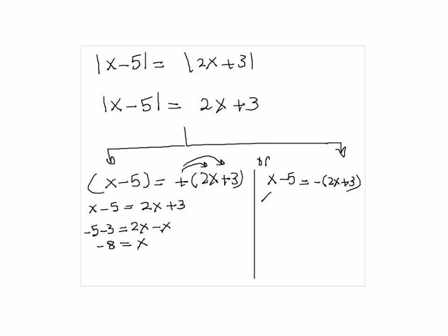Second case: we have x minus 5 is equal to minus 2x minus 3. So if I move minus 2x to the left it becomes plus 2x, and then I move minus 5 to the right it becomes plus 5. In other words, we are adding 5 to both sides of the equation, and that would be 5 minus 3. So here we have 3x equal to 2, so x equal to 2/3.